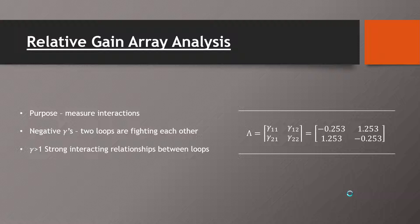As shown, you can see that there are two negative gammas, and these show that our two loops are fighting each other as they're trying to reach their individual set points. And we also had two gammas that were greater than one, which showed that we had strong interacting relationships between the two loops that we were trying to control.